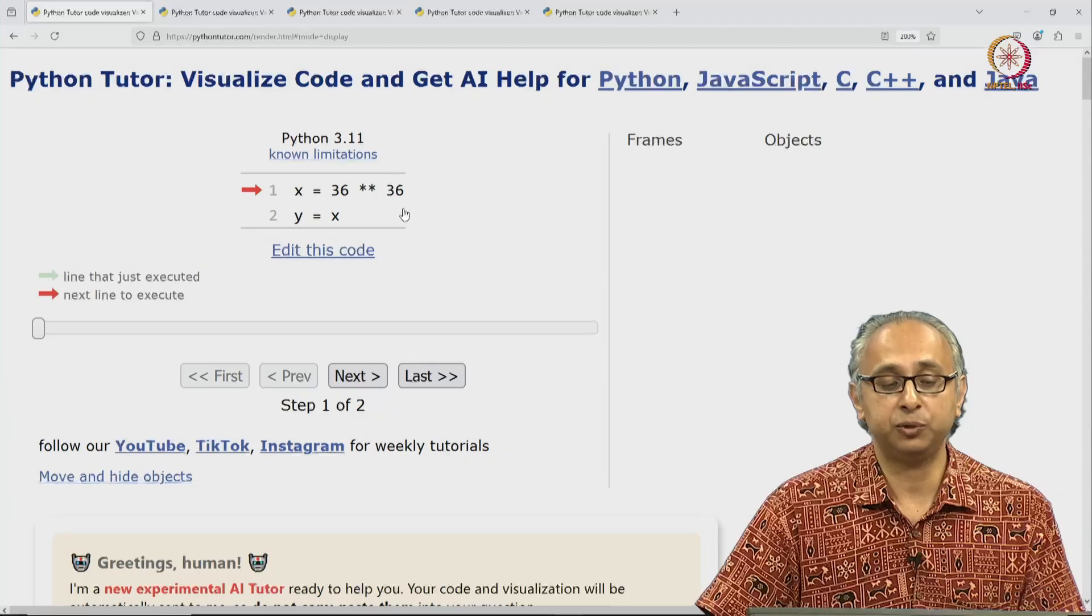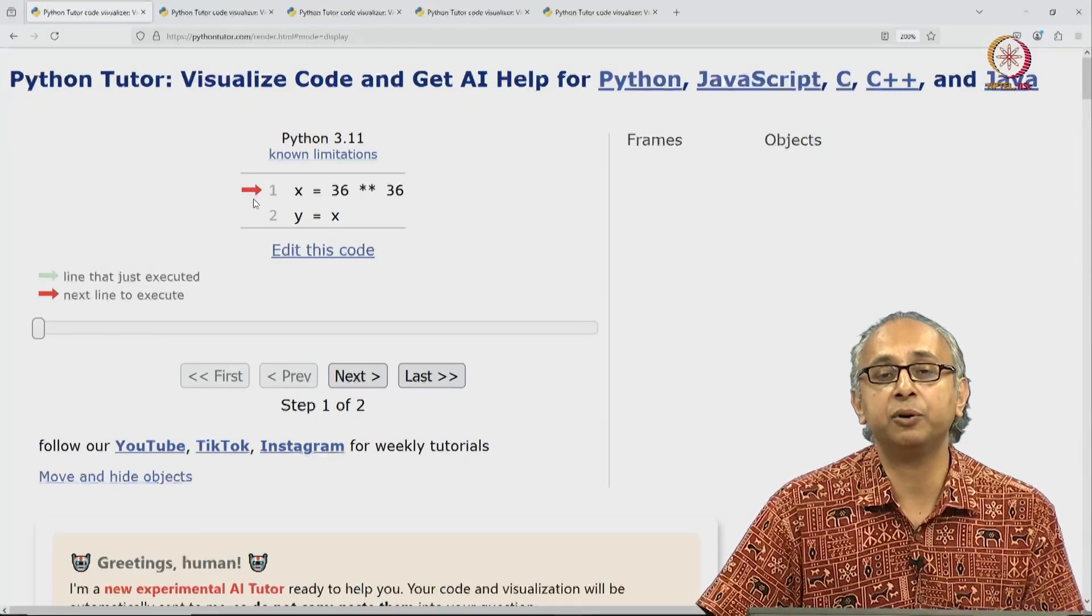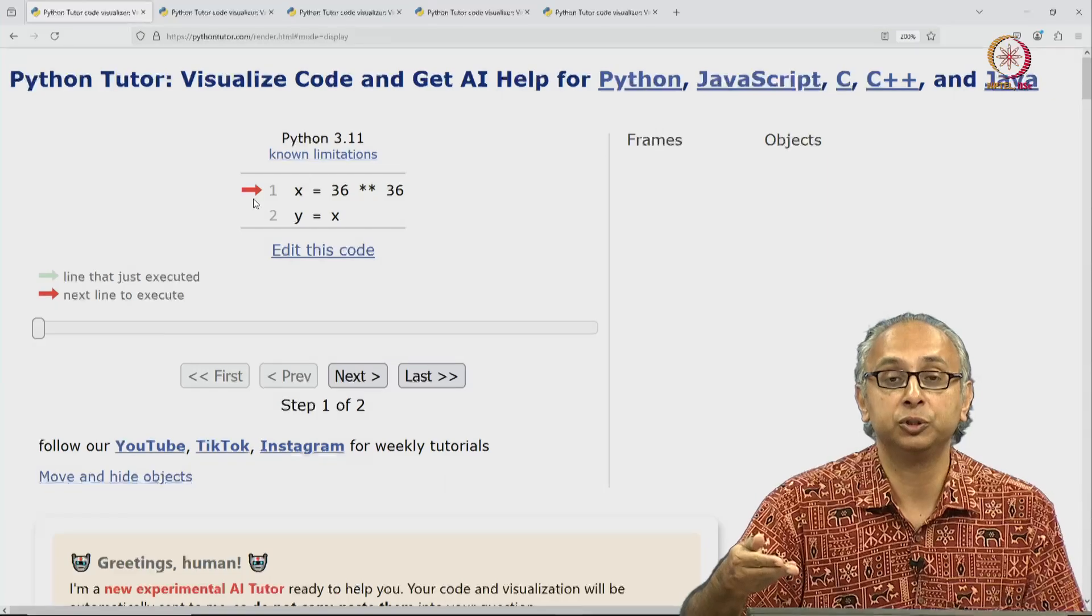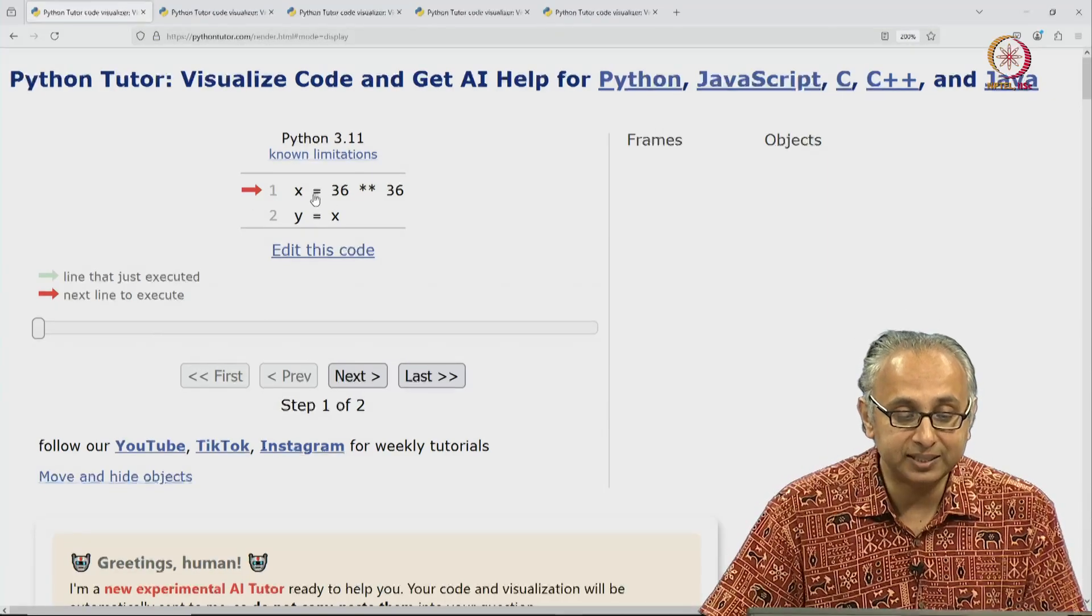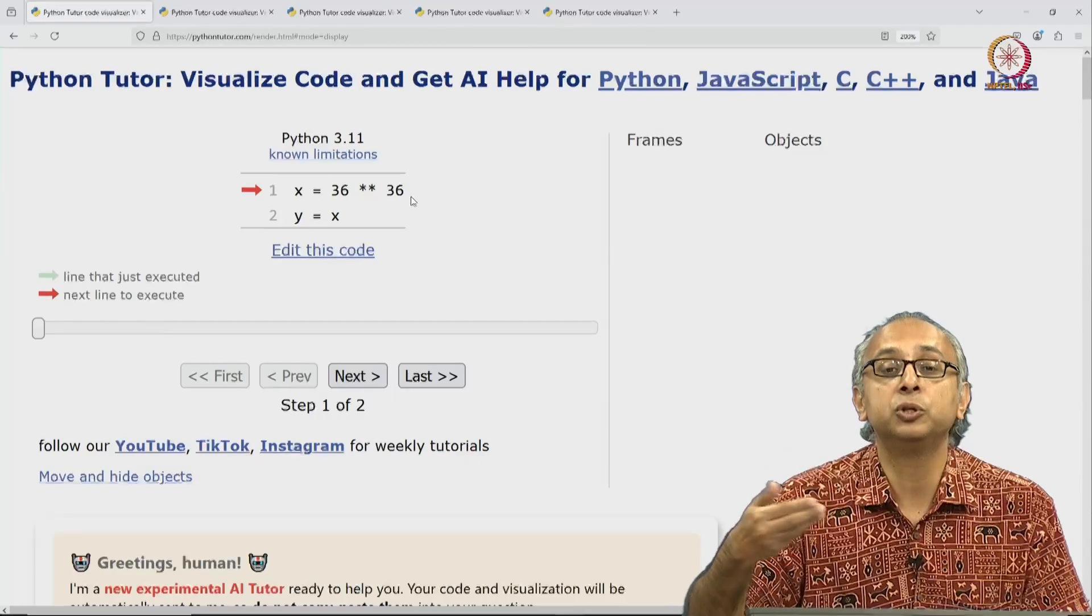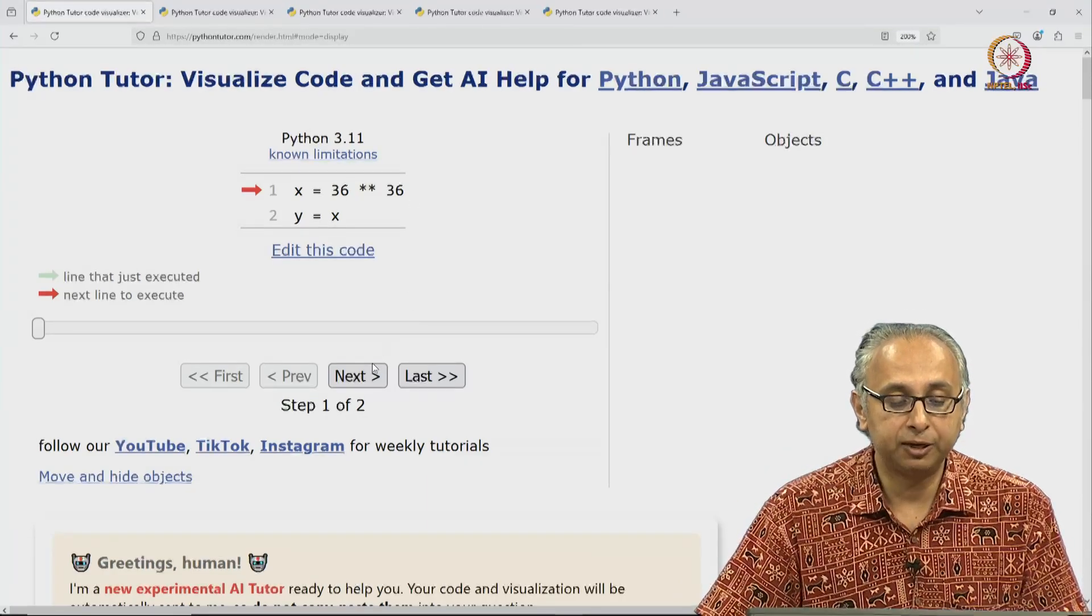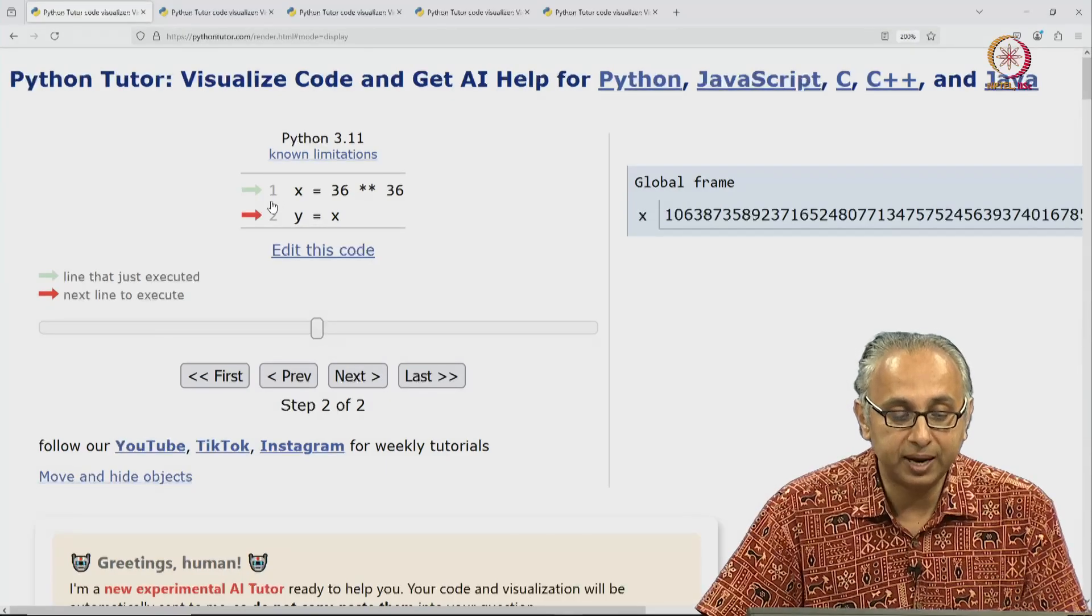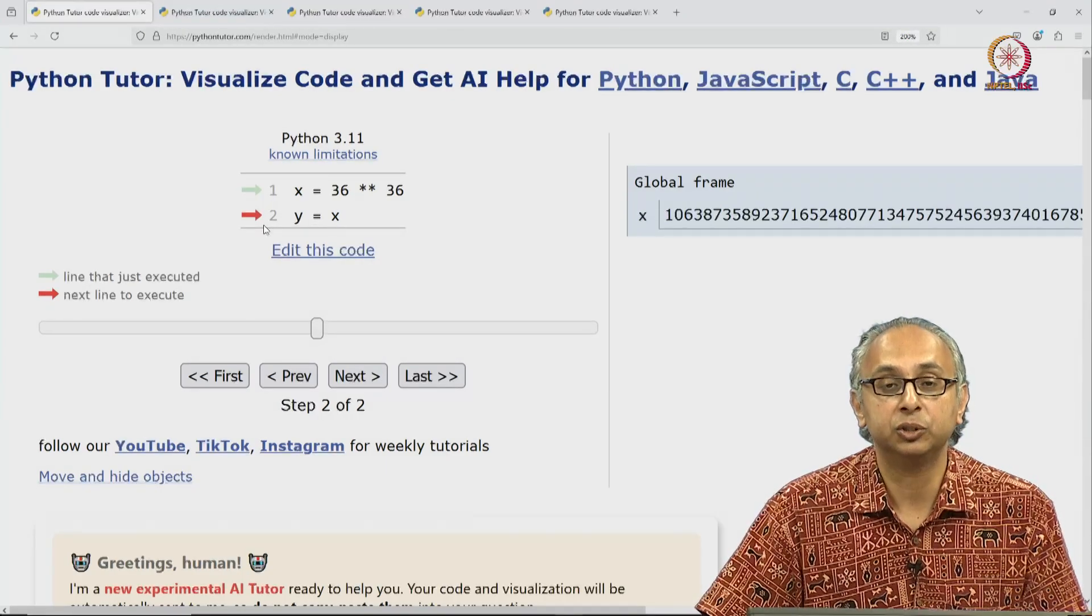When Python Tutor is ready to execute, this red arrow will indicate the statement that is about to execute. So we haven't yet done x is equal to 36 to the power 36, we're about to do that. And when we click on this next, that first statement will execute and the red arrow jumps to line 2.